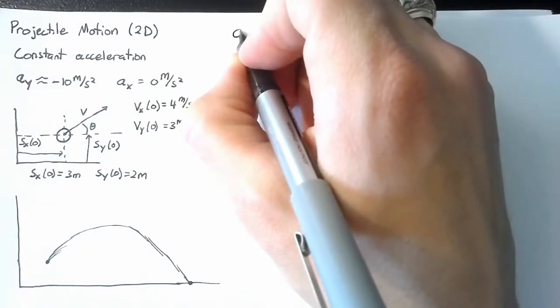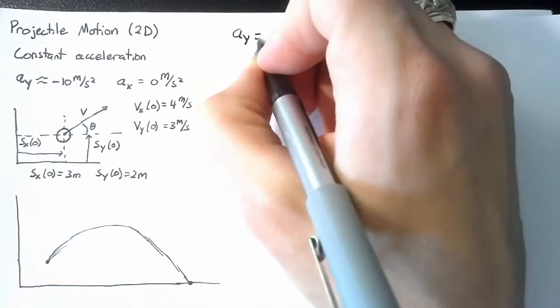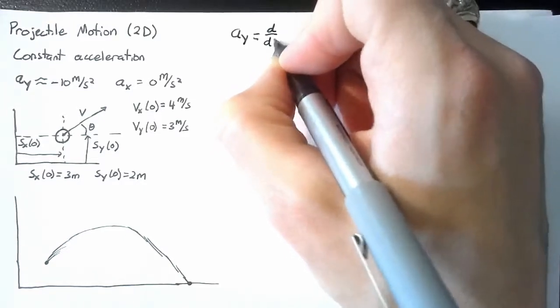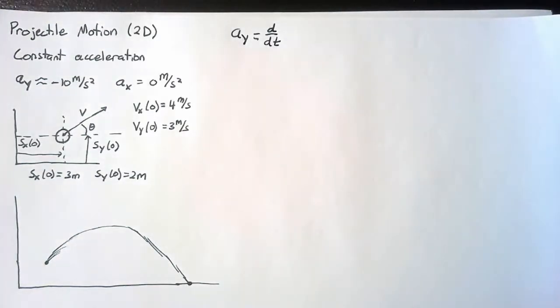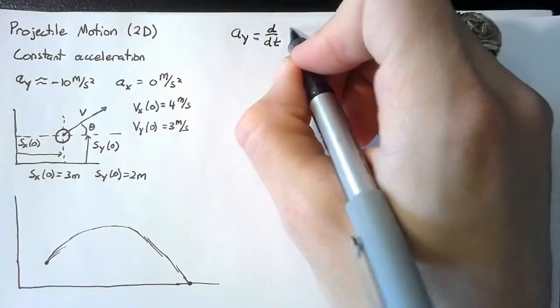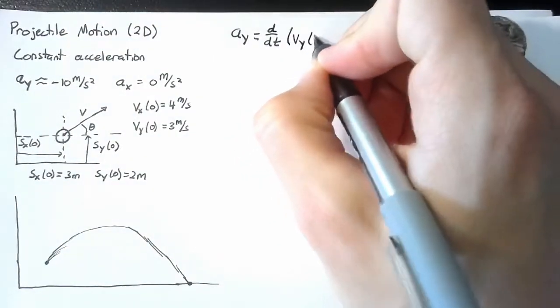So these have the exact same starting point as before. And in fact, things don't even change in the y direction. The acceleration, again, is the time derivative of our velocity in the y direction.